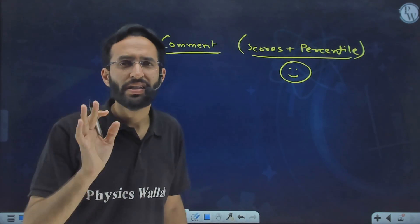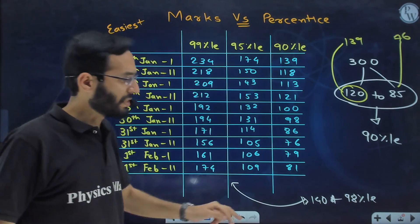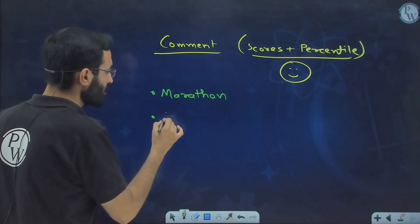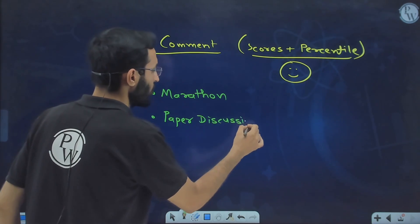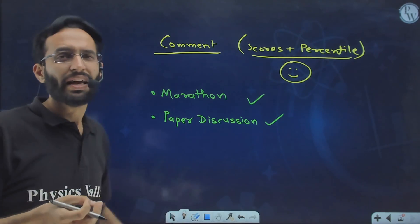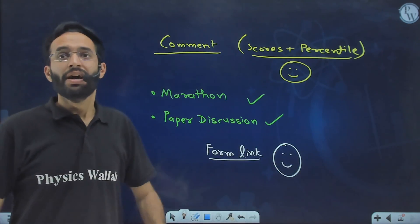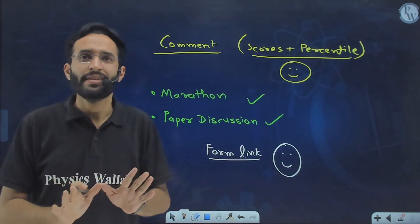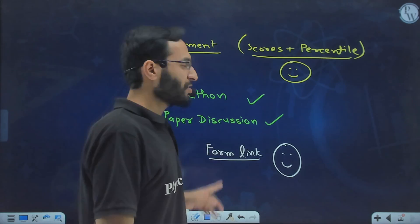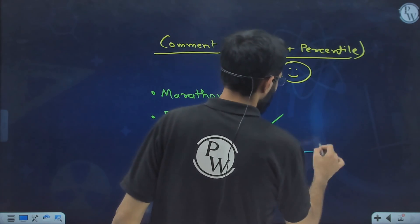Share your result with us — whether you fulfilled your criteria of 90 percentile for JEE Advanced, or whether you are getting 95 or 99 percentile. If you attended our marathon sessions and paper discussion sessions and feel you benefited, this is the time to celebrate your result with us. Even if you got less than 90 percentile, we will send a form link with this video — just send your result and we will analyze it and guide you on how to prepare for upcoming exams.